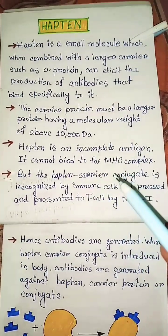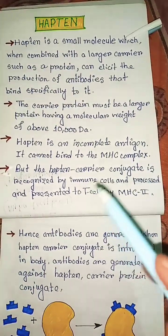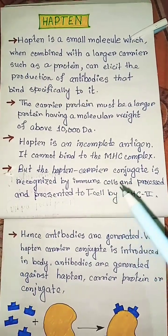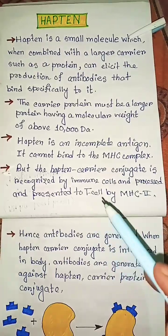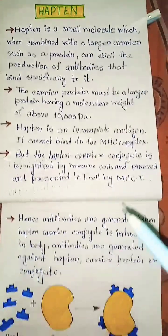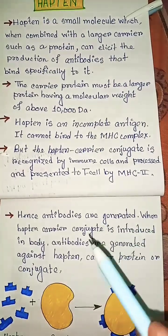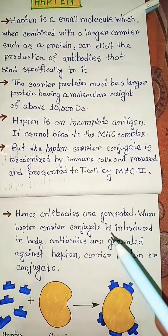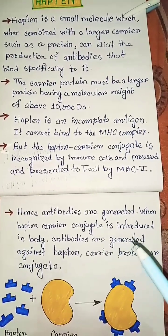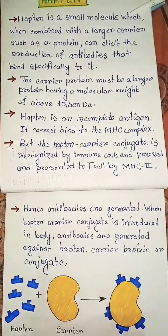A hapten cannot bind to the MHC complex. But the hapten-carrier conjugate is recognized by immune cells, and processed and presented to T cells by MHC II. Hence antibodies are generated. When the hapten-carrier conjugate is introduced into the body, antibodies are generated against the hapten-carrier protein or conjugate.